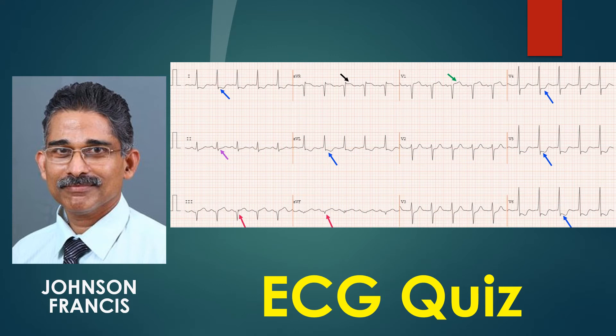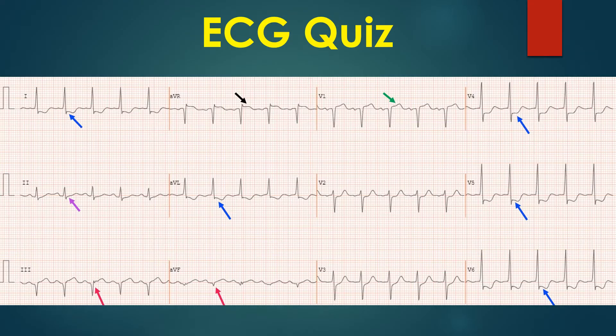What are the salient findings on this ECG? In addition to sinus tachycardia, ST depression is noted in lateral leads 1, AVL, V4 to V6, marked by blue arrows.